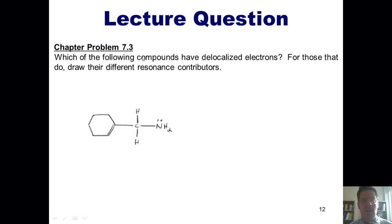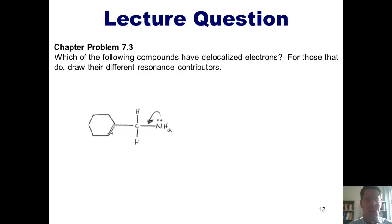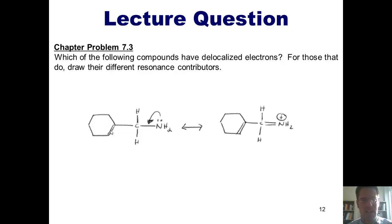Here's another example from our question set. Can these lone pairs on the nitrogen be pushed into this double bond in some fashion to give me a legitimate resonance contributor? I want you to imagine doing that. If we attempted that, we would form a carbon-nitrogen double bond. As we used with the earlier example involving the oxygen in the ring, do you see any problems with that molecule?